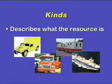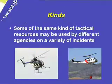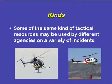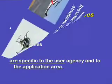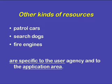The kinds of resources can be as broad as necessary to suit the incident application. Some of the same kinds of tactical resources may be used by different agencies on a wide variety of incidents. For example, both police and fire departments will often use helicopters, fuel tenders, and crew transports. Other kinds of resources — patrol vehicles, search dogs, or fire engines — are specific to the user's agency and to the application area.